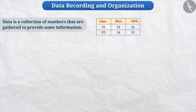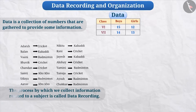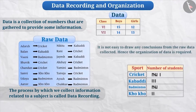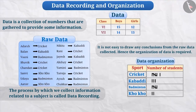Now you must have understood that data is a collection of numbers which are gathered to give some information. The process by which we collect information related to a subject is called data recording. It is not easy to draw any conclusion from the raw data collected, and hence the organization of data is required.